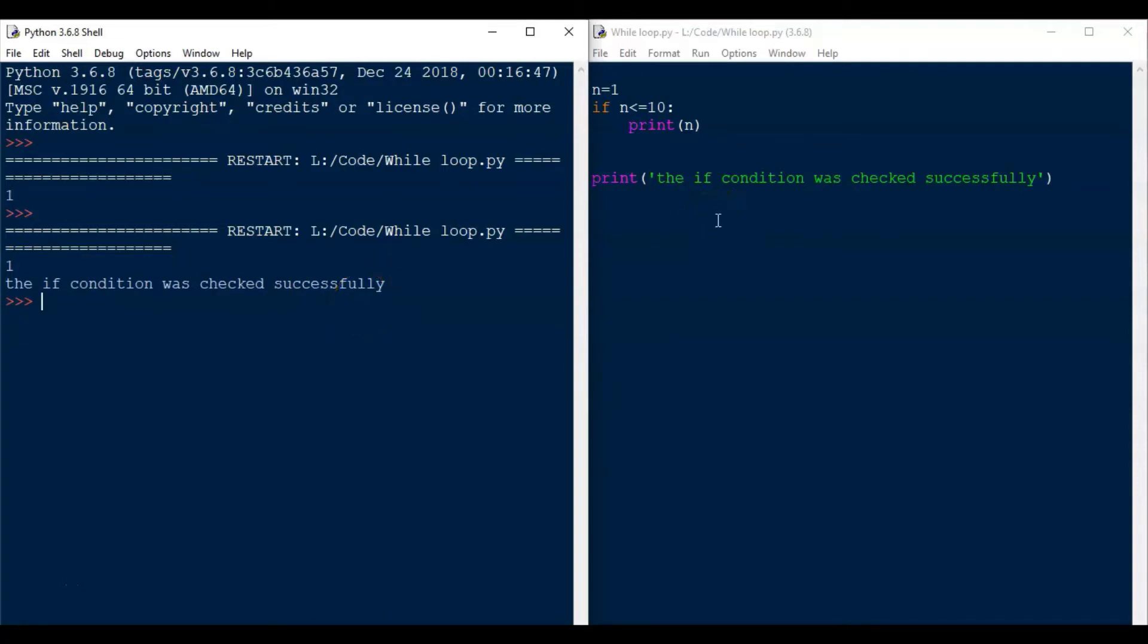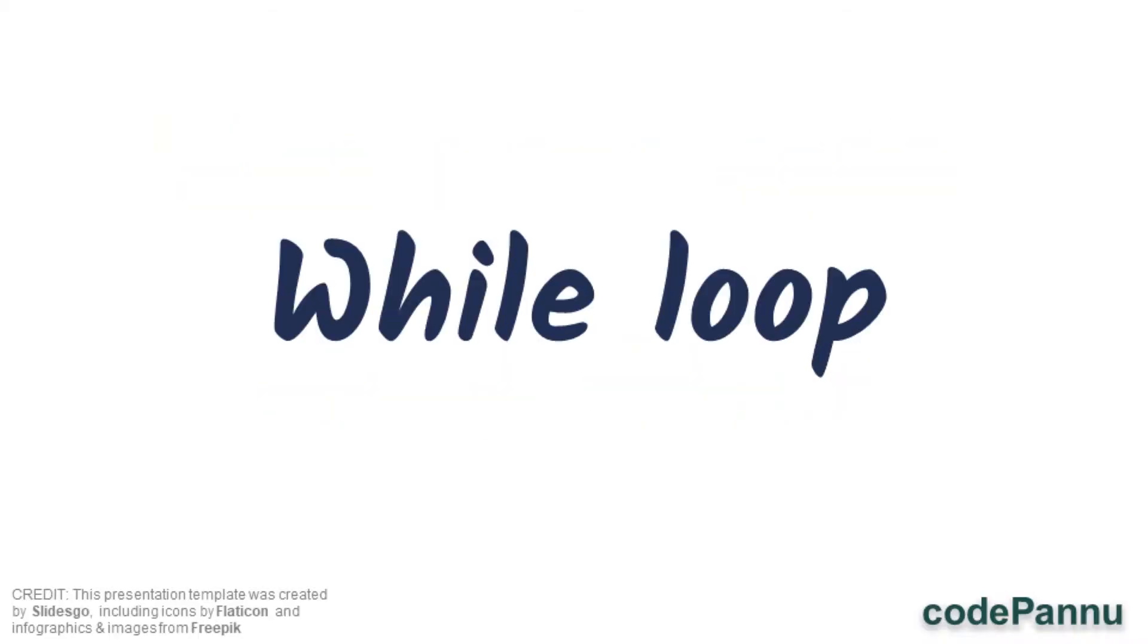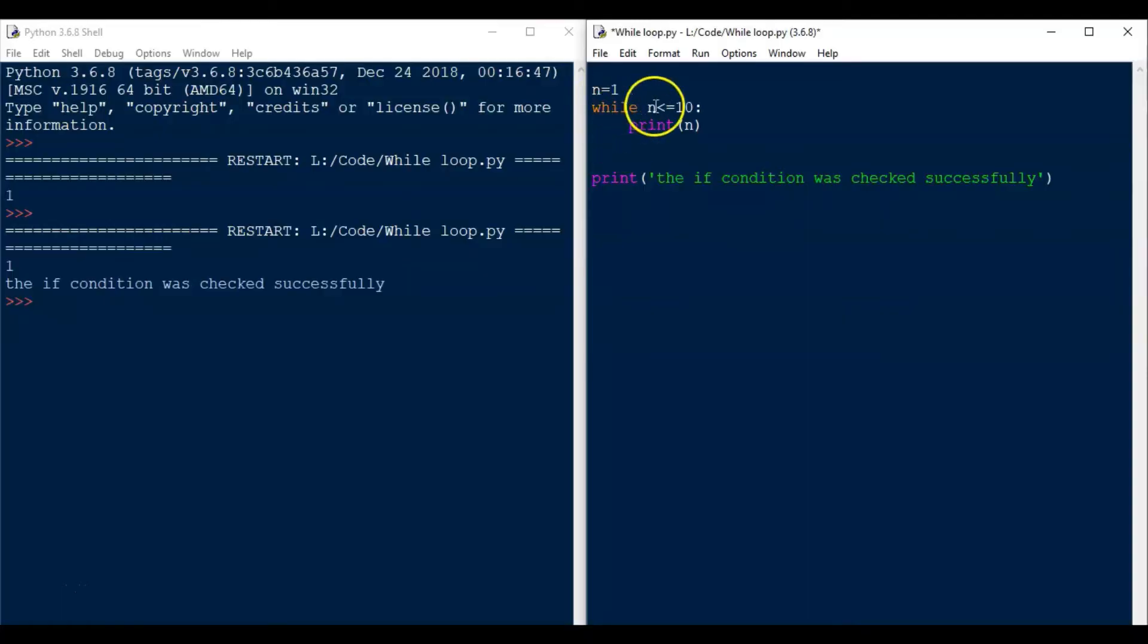Now, let us write the same code in a loop so we can check this condition again and again. How do we do that? Instead of using if, we will use while here. We will change that if and we will put while. While is a loop, so it will keep checking the condition again and again continuously.